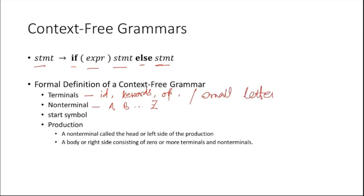There should be a start symbol — in most cases it is given by S, but it can be anything else. You have to define what the start symbol is for your grammar. Then there should be some set of production rules. A non-terminal is called the head or left side of the production.